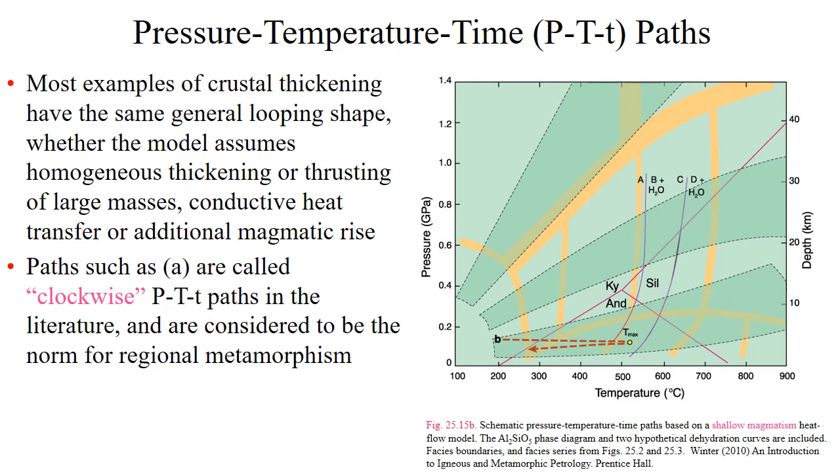Path B in figure 25.15 illustrates a rock that is heated and cooled at virtually a constant pressure by magmatic intrusion and is considered to be an appropriate P-T-t path for contact metamorphism. Depending upon the extent of magmatic activity and its contribution to crustal mass, any number of paths transitional between A and B can be imagined representing a gradation from high pressure blueschist metamorphism to regional metamorphism.